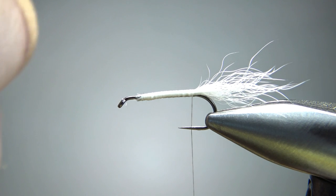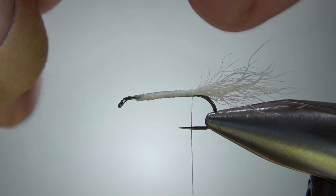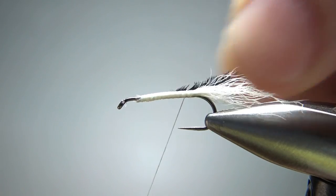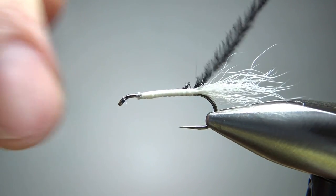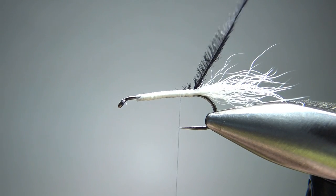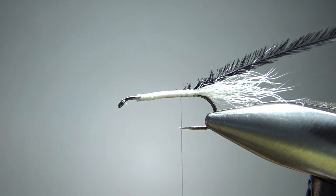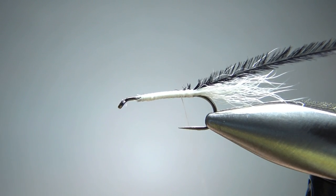And it's a three part body. The back part, I guess the butt, is black ostrich hurl. So I'm going to catch in, I've got about a four or five inch hurl here. I'm just going to catch it in right there and I'm going to wrap it to about where my thread is. Believe it or not, I can probably get about six wraps between where that is and where my thread is. So that's where I want to tie it off, but here's another tip.